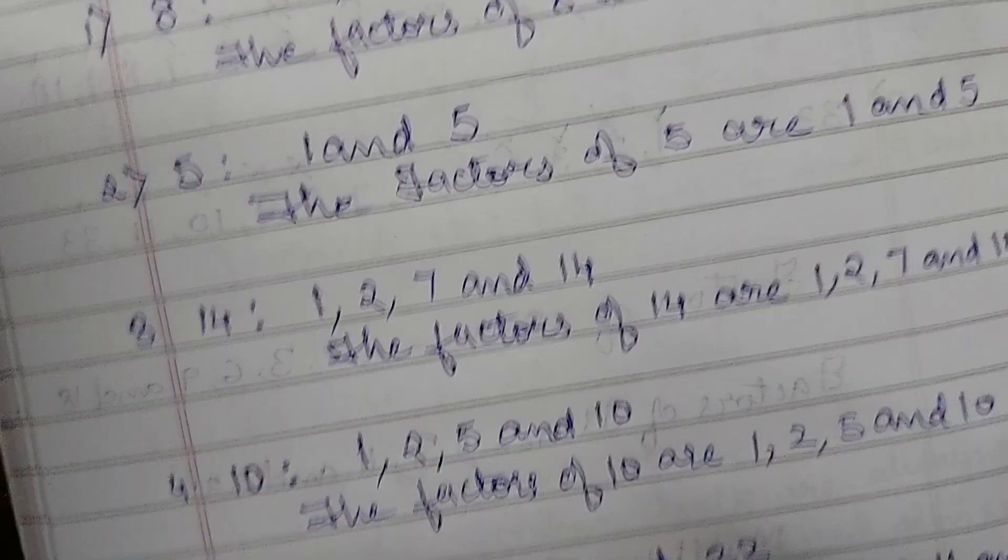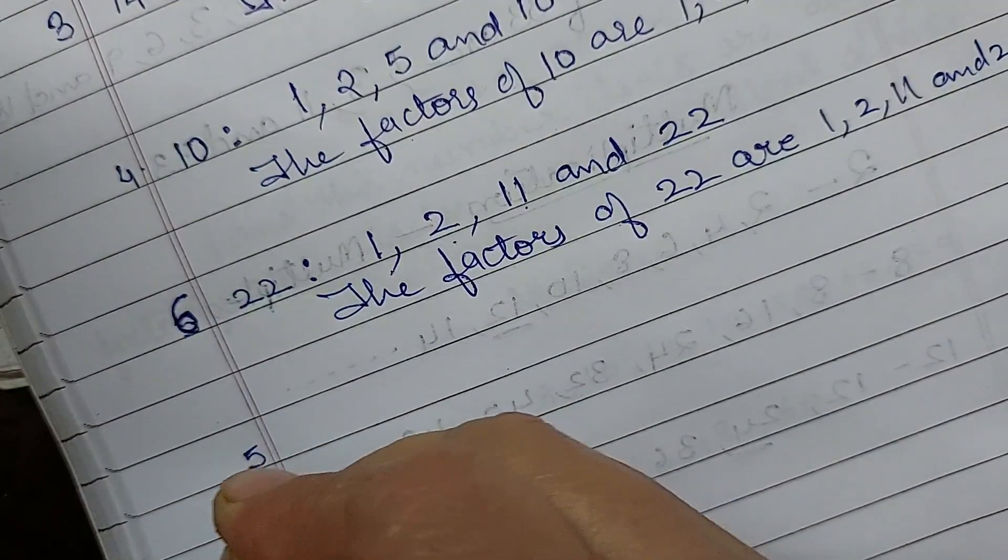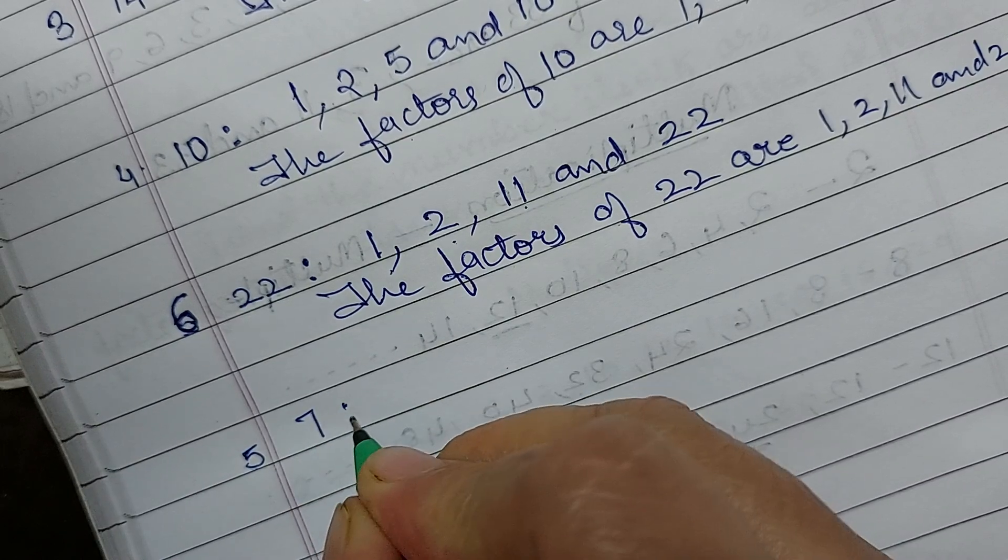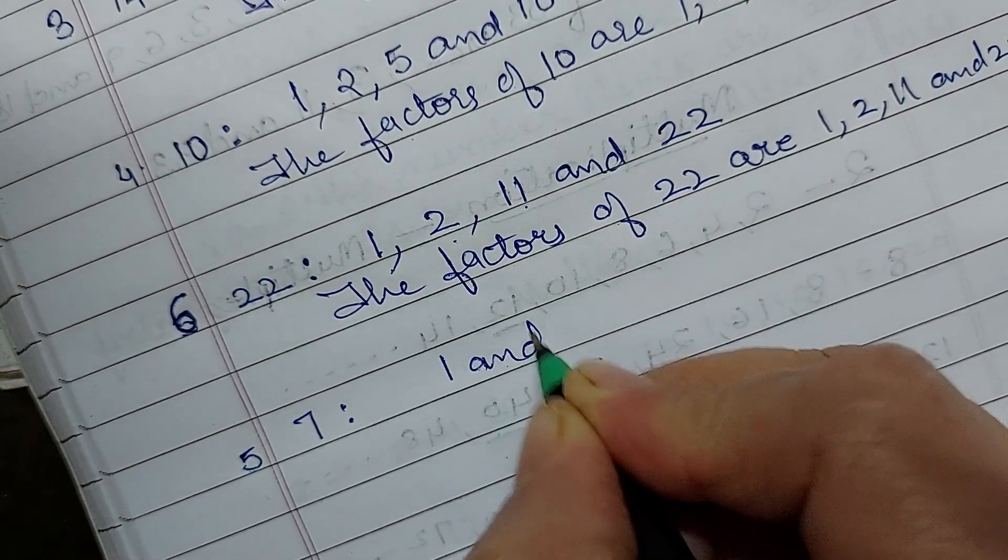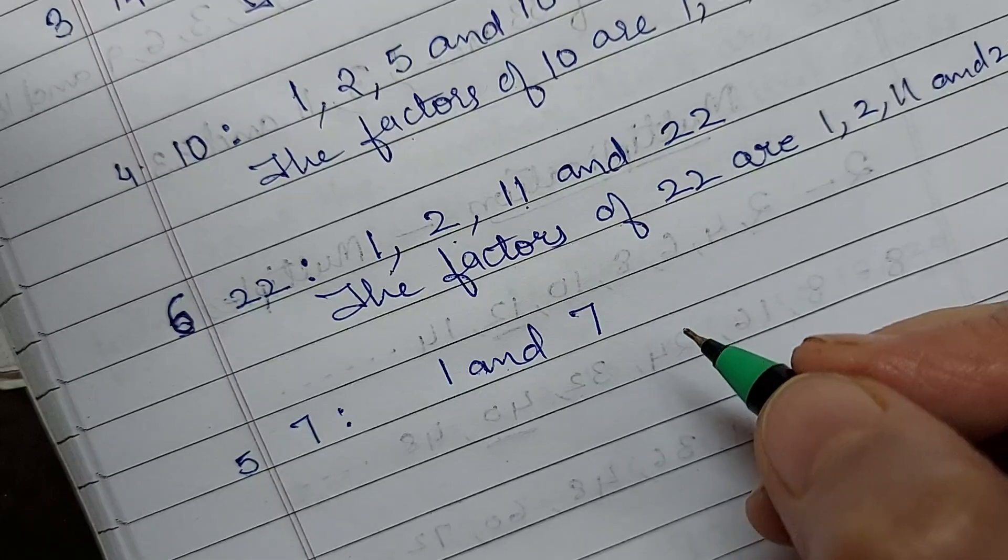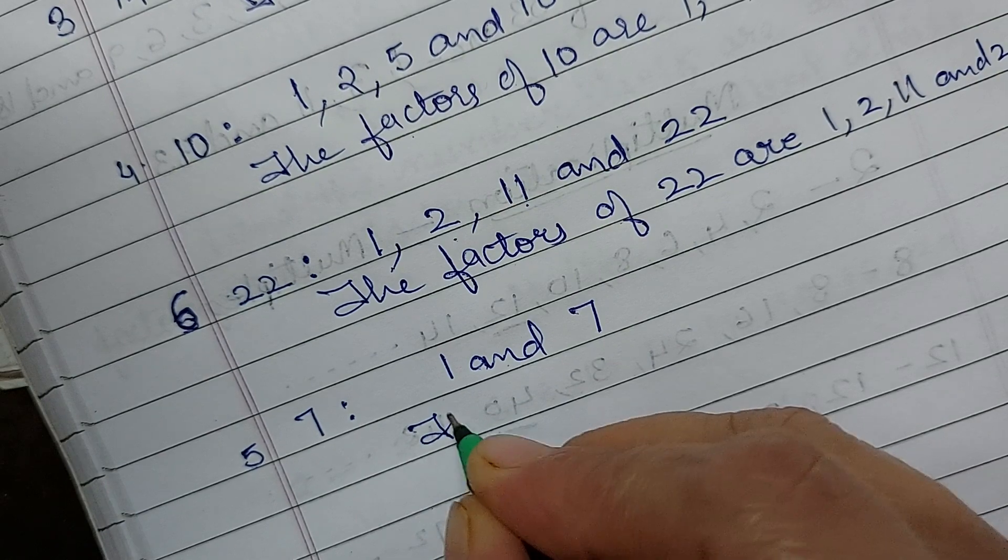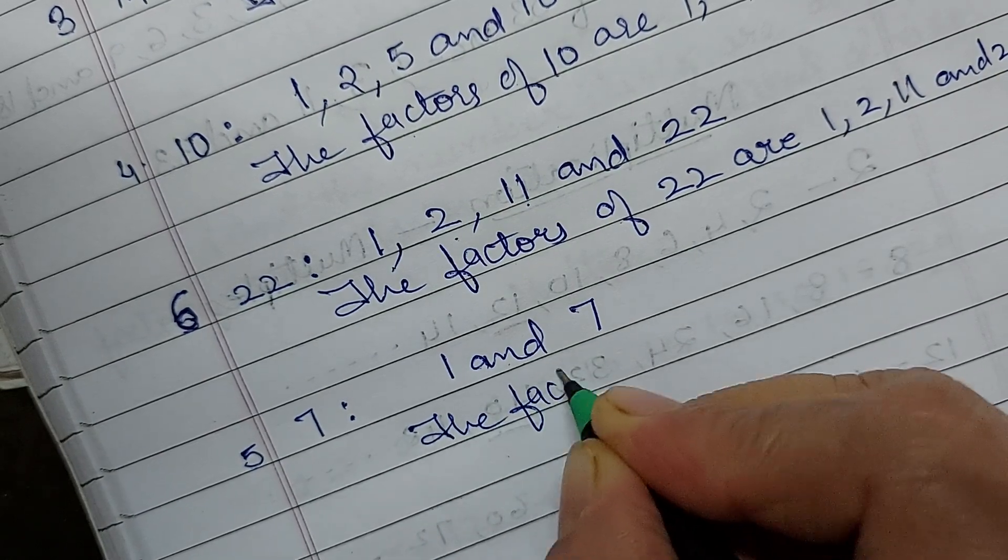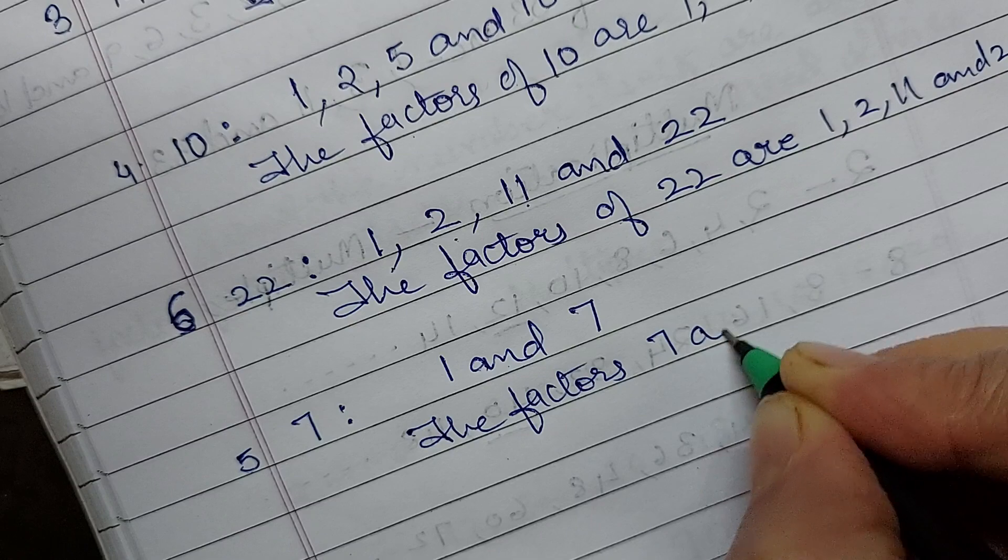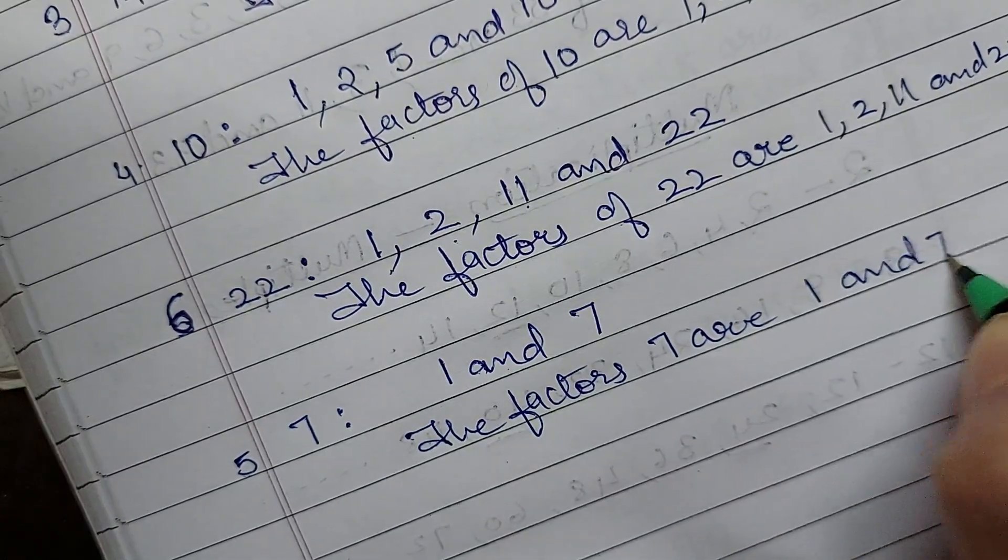7 you can write. 7 is a prime number. Prime number is like 1 and 7 only. 7 doesn't come in any other table. 7 is a prime number. So it will be the factors of 7 are 1 and 7.